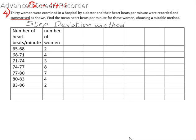Here the data given is number of heartbeats per minute: 65 to 68, number of women are 2; 68 to 71, four; 71 to 74, three; 74 to 77, eight; 77 to 80, seven; 80 to 83, four women; 83 to 86, two women. For this data we are going to find out mean using the step deviation method.